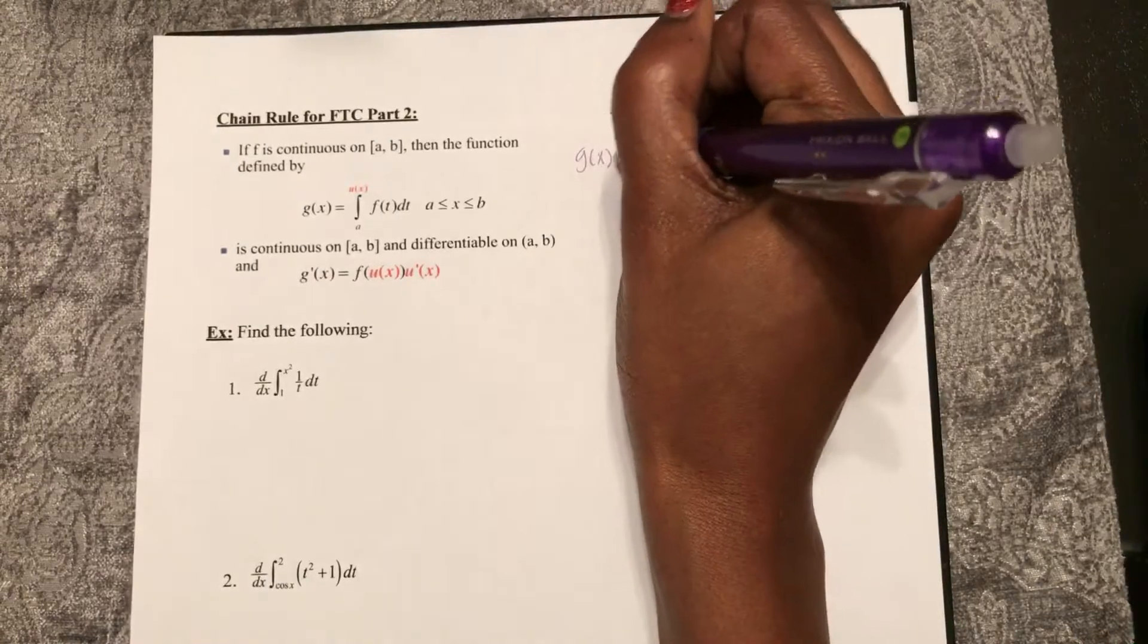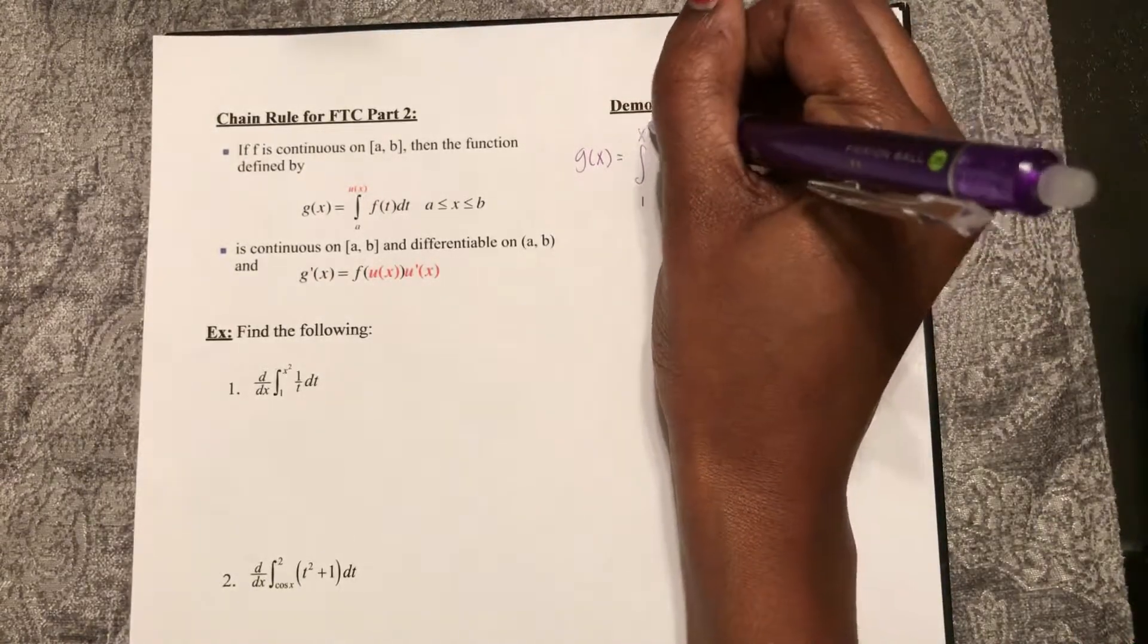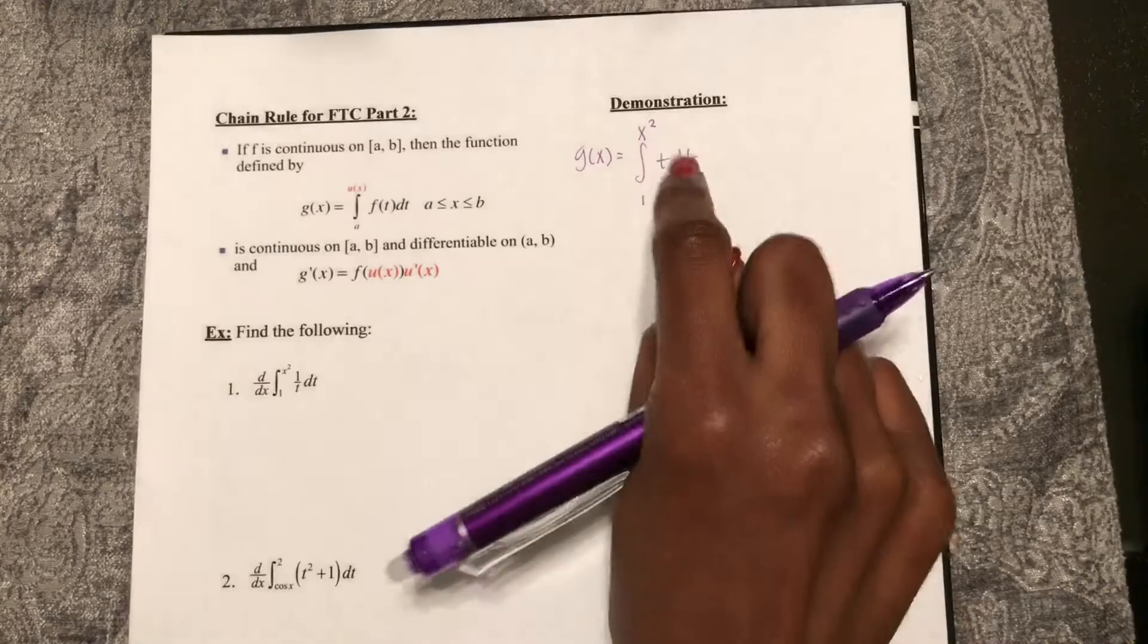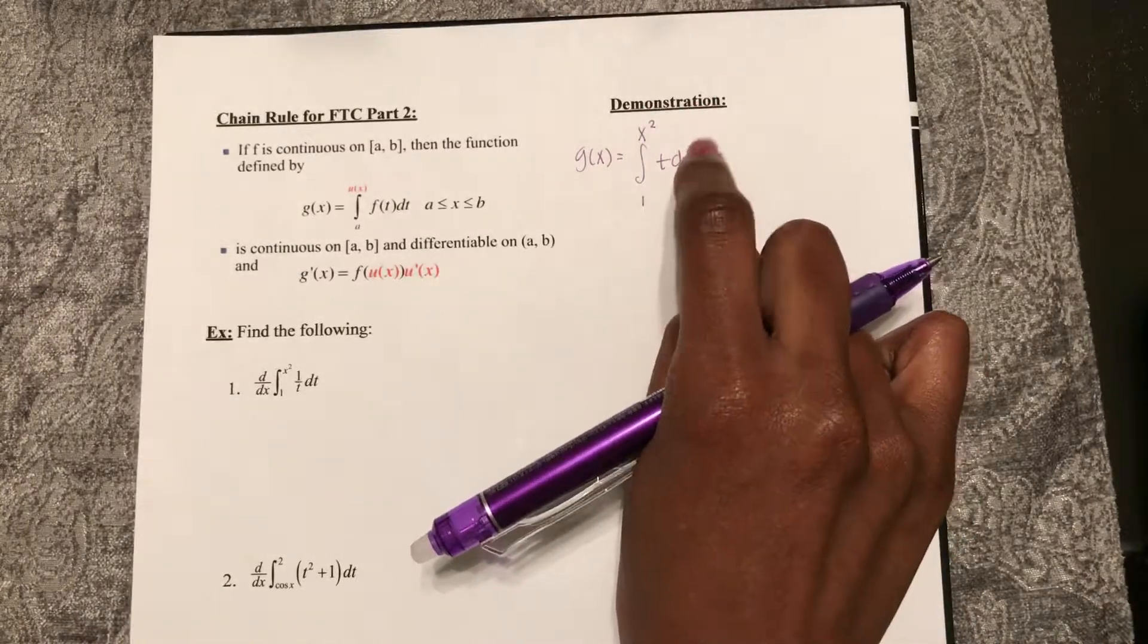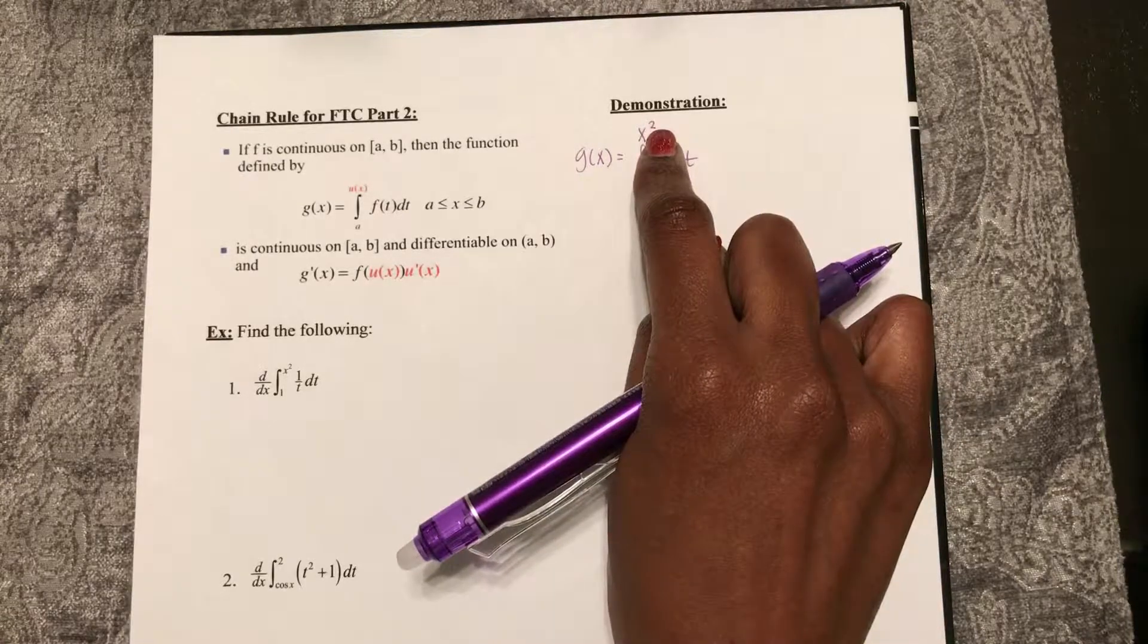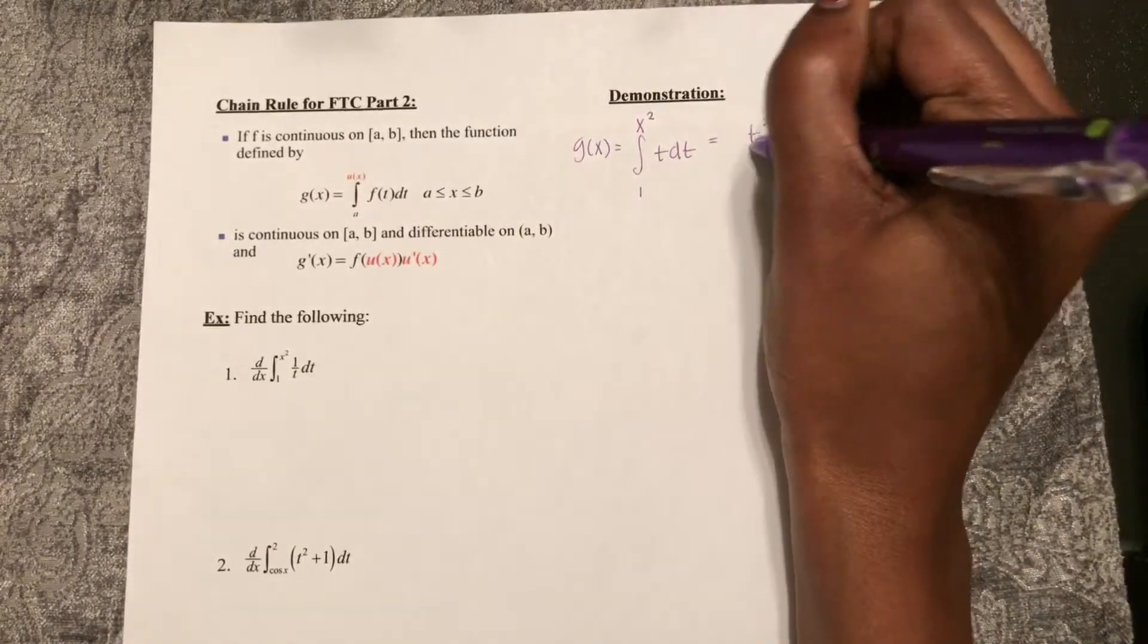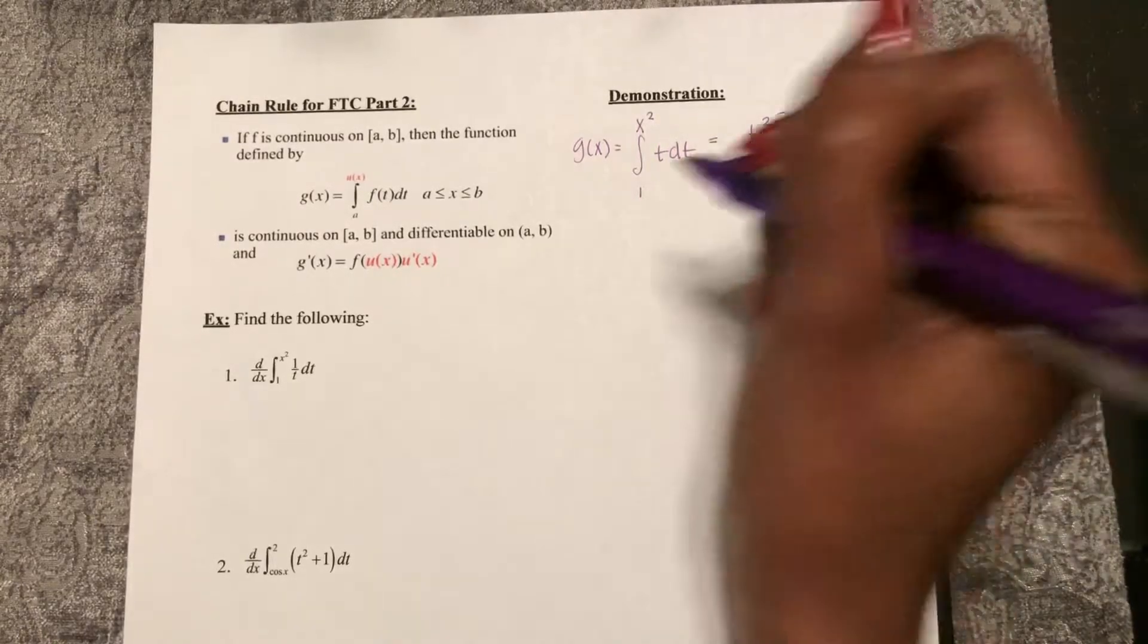So let's say I define g of x to be the antiderivative from 1 to x squared of t dt. So I can tell this looks a lot like FTC part 2. It's from a constant, but now it's to a function larger than one variable. So if I find the antiderivative first, that becomes t squared over 2. Evaluate it from 1 to x squared.